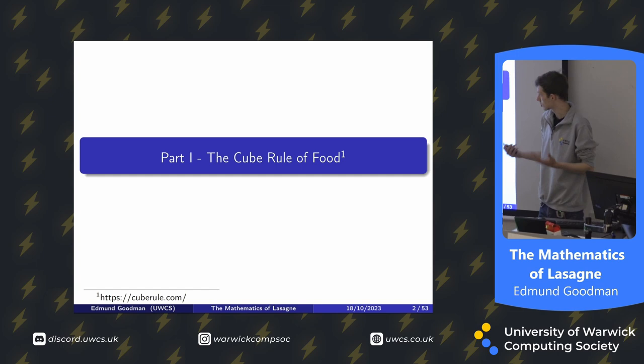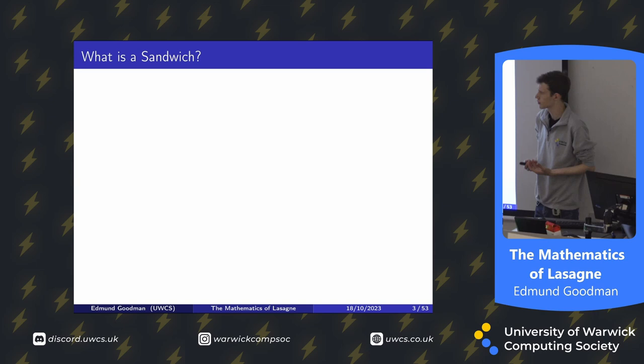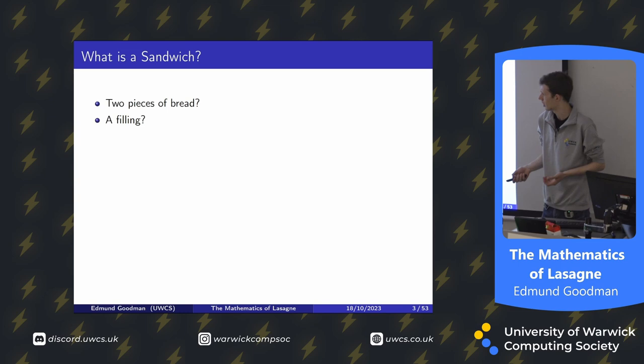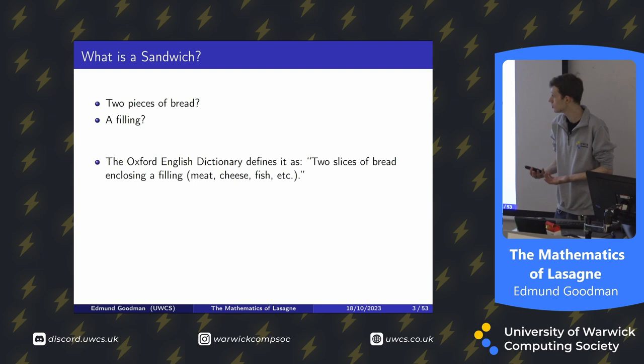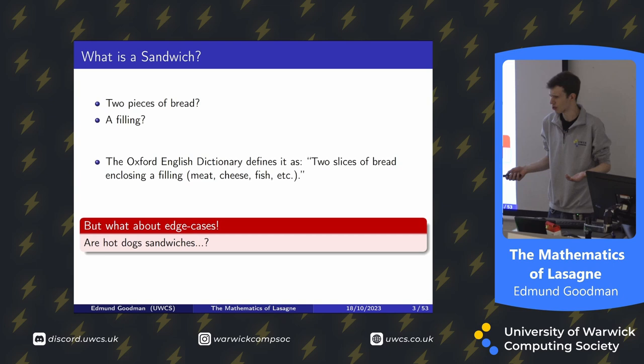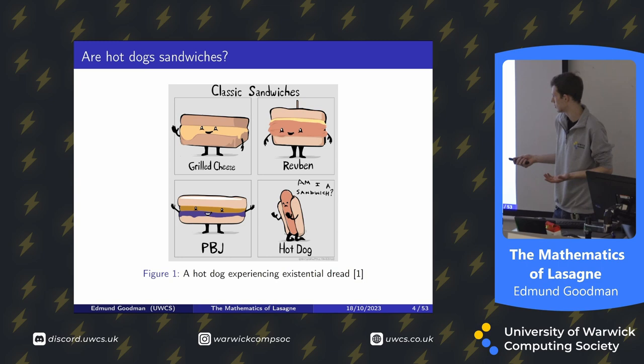I'm going to lead with the question: what is a sandwich? Two pieces of bread? A filling? The Oxford English Dictionary defines it as two slices of bread enclosing a filling, for example meat, cheese or fish. But there are some edge cases. Are hot dogs sandwiches? Here we can see three very happy sandwiches and a hot dog experiencing existential dread about whether or not it is a sandwich.